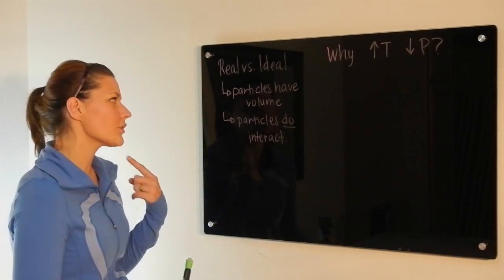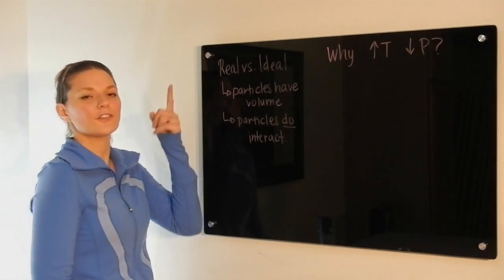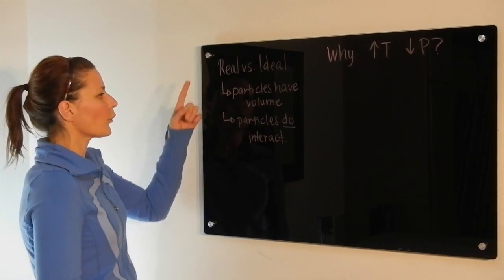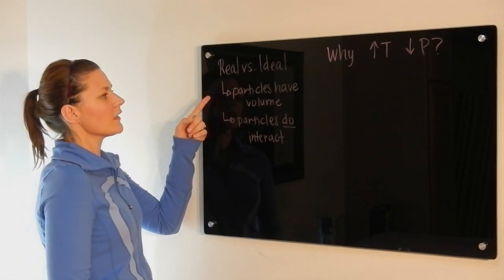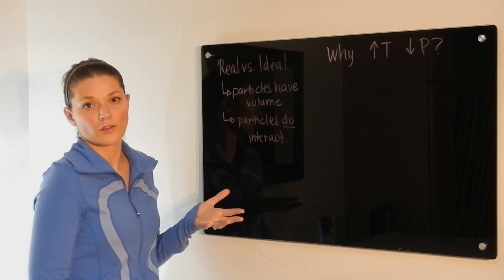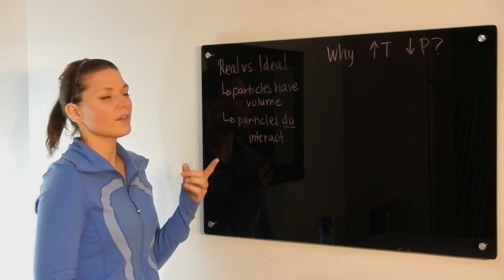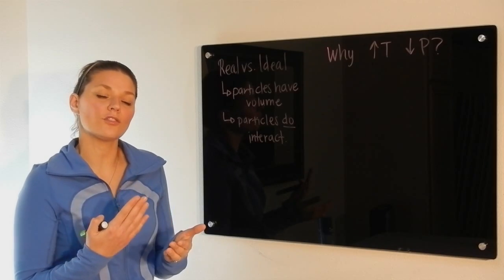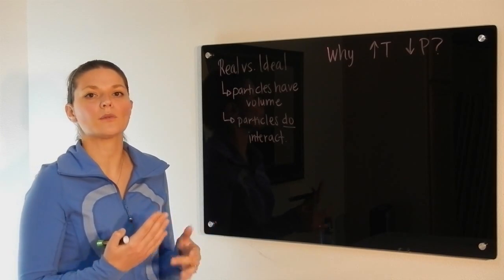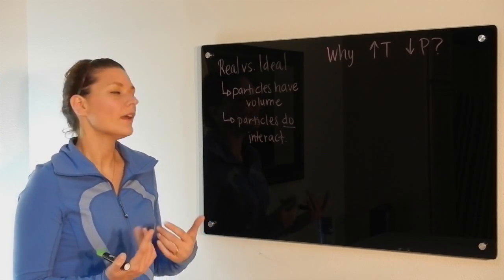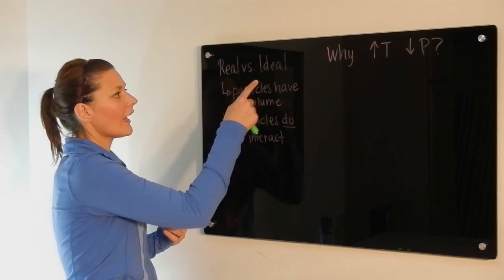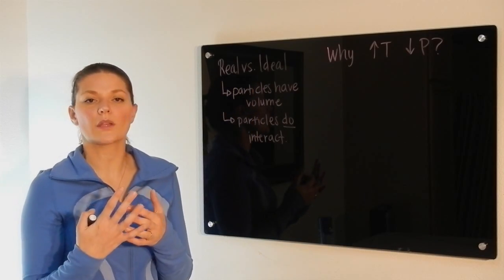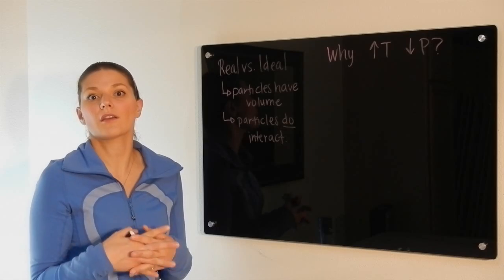First of all, we need to remember what the difference is between a real gas and an ideal gas. With a real gas, particles actually do have volume. Ideal gas says that they don't — reality is they do, which would cause an issue for why they wouldn't be able to behave the same way. Additionally, ideal gas assumes that there is no attraction between particles. In reality, there are.